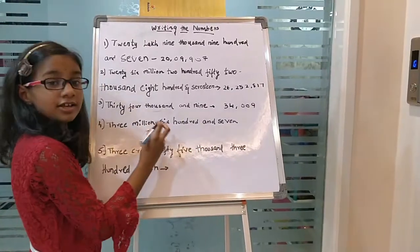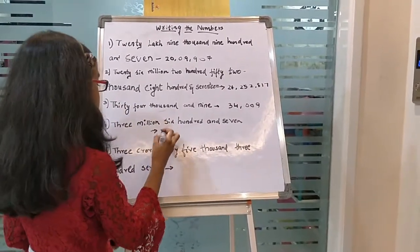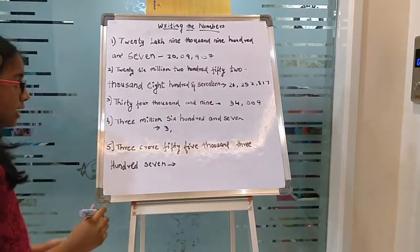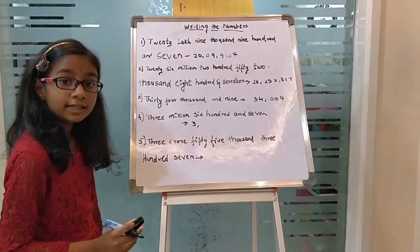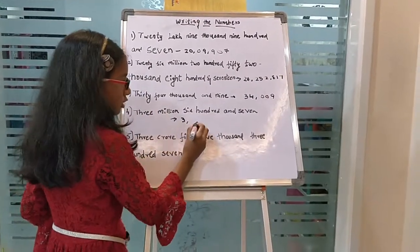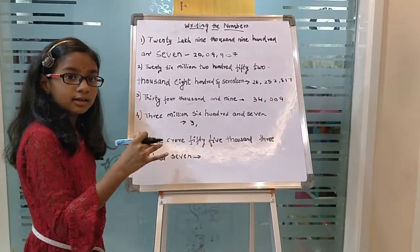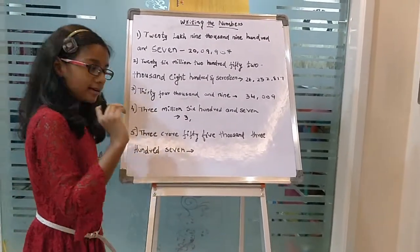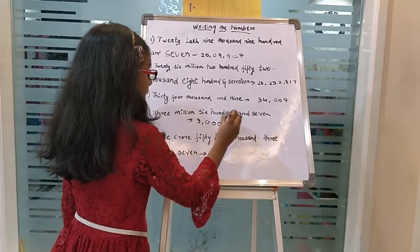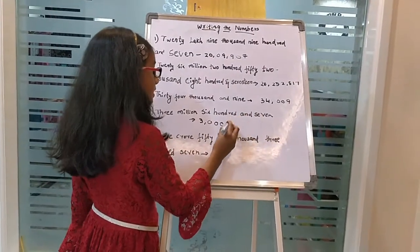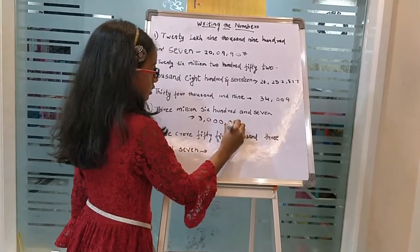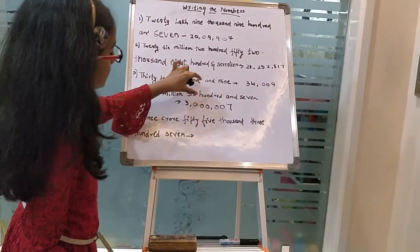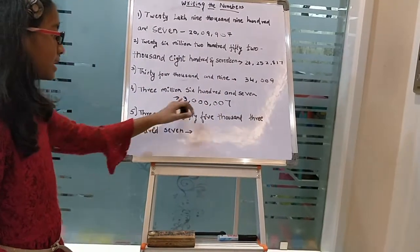Let's move on to this one. 3 million. If there is million, it should probably be in the international system. 3 million, 607. There is nothing in the thousands period, so we need to keep 0 - 3 zeros. Because there are 3 in the thousands period: 1,000, 10,000 and 100,000. And 7. There is nothing in the hundreds and tens, so 0 and 7. We have 3 million and 607.